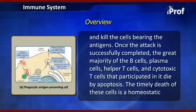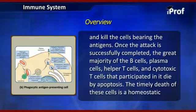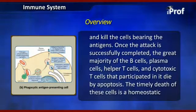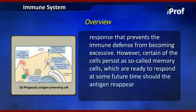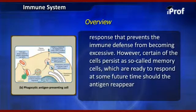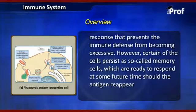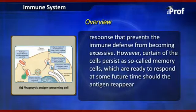Once the attack is successfully completed, the great majority of the B cells, plasma cells, helper T cells, and cytotoxic T cells that participated in it die by apoptosis. The timely death of these cells is a homeostatic response that prevents the immune defense from becoming excessive. However, certain types of cells still remain, and these are called memory cells, which are ready to respond when the antigen reappears in the future.